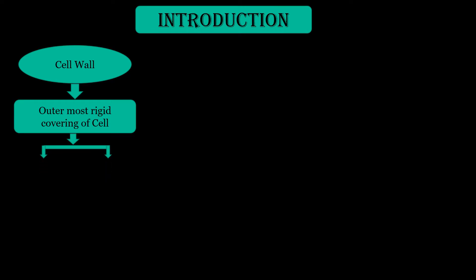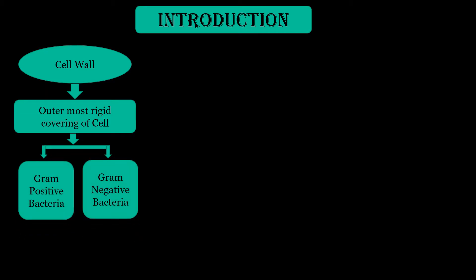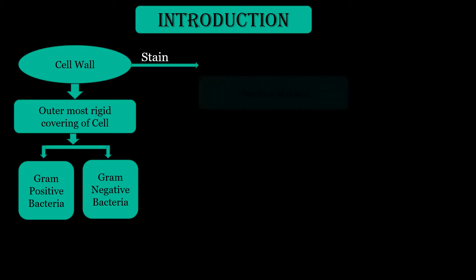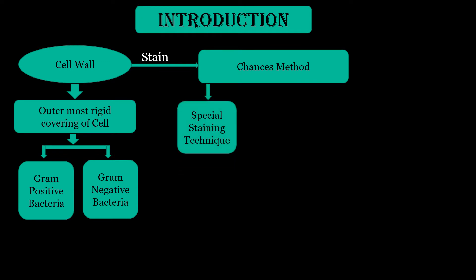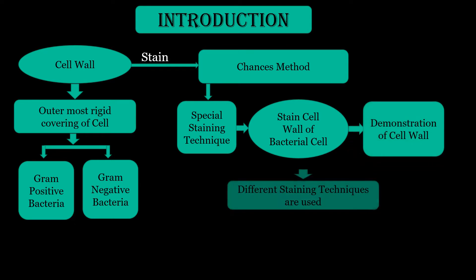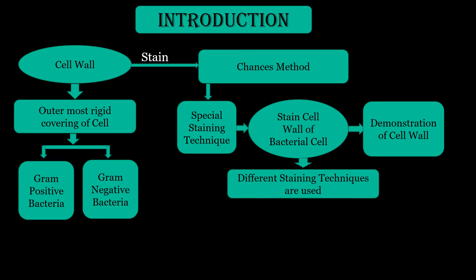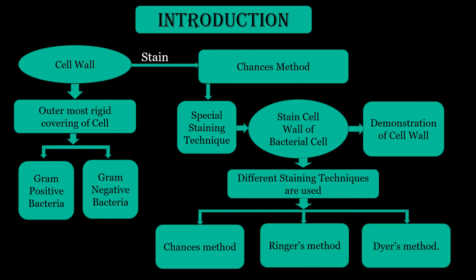Cell wall is the outermost rigid covering of a cell. On the basis of cell wall, bacteria is classified into two types: gram positive bacteria and gram negative bacteria. Here we are going to stain the cell wall of bacteria by Chance method. Chance method is a special staining technique used to stain the cell wall of bacterial cells and it helps in demonstration of the cell wall. Different staining techniques are used to stain the cell wall: the first is Chance method, the second is Ringer's method, and the third is Deyer's method. Here we are concerned with Chance method.